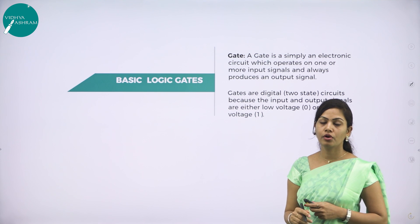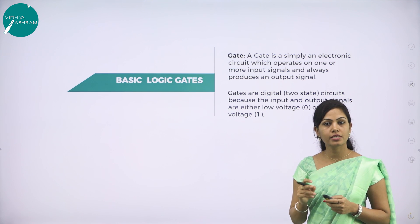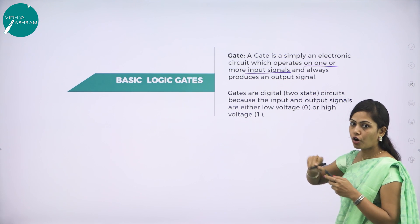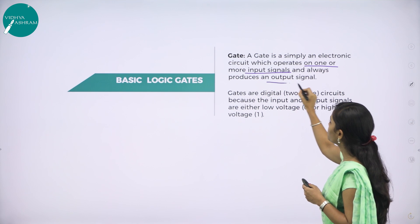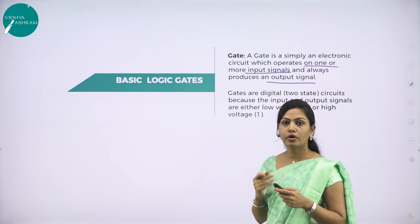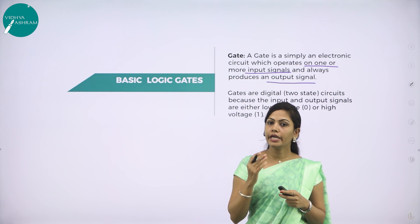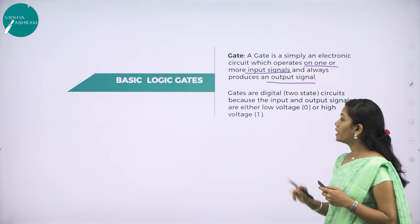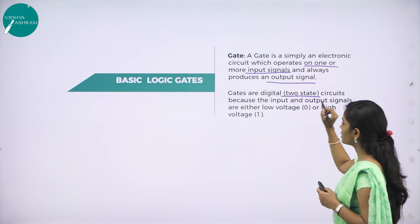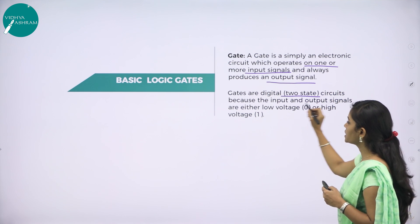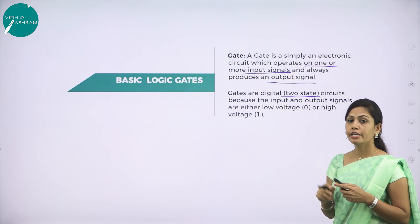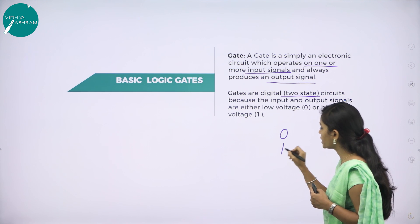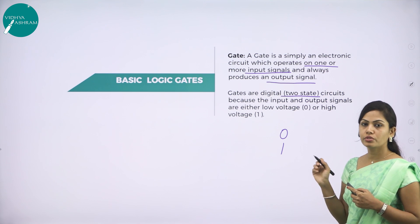Next, we have gates. A gate is an electronic circuit which operates on one or more input signals and always produces one output signal. Gates are digital circuits consisting of two states because the input and output signals are either low or high. If it is low voltage, we call it 0; if it is high voltage, we call it 1.